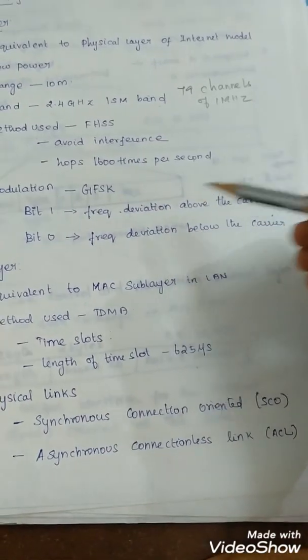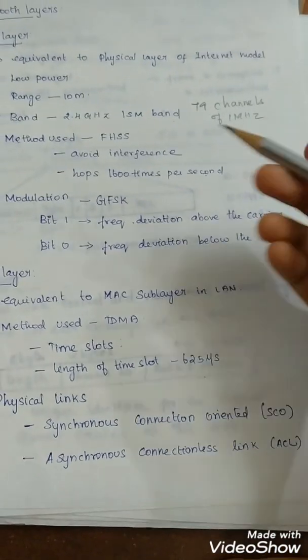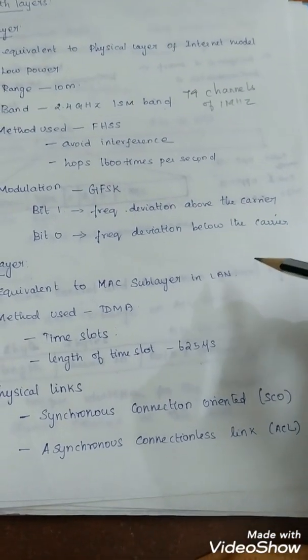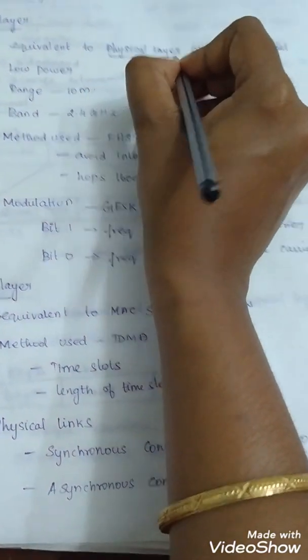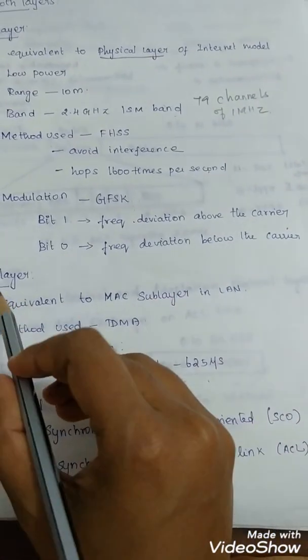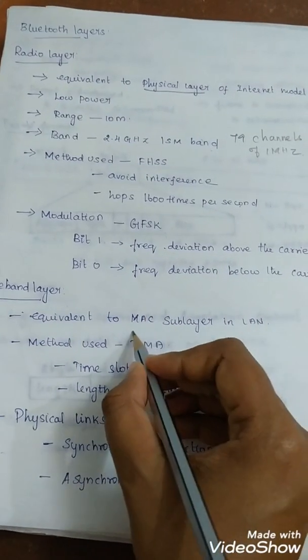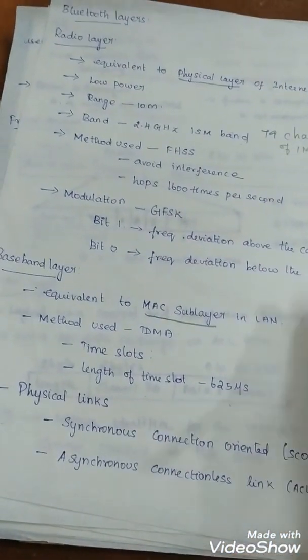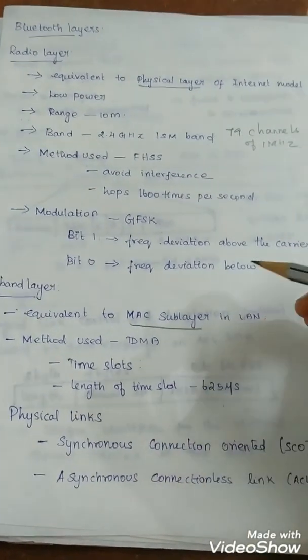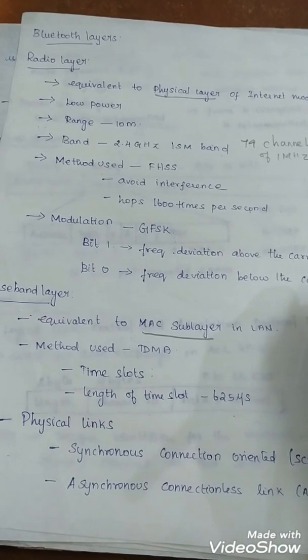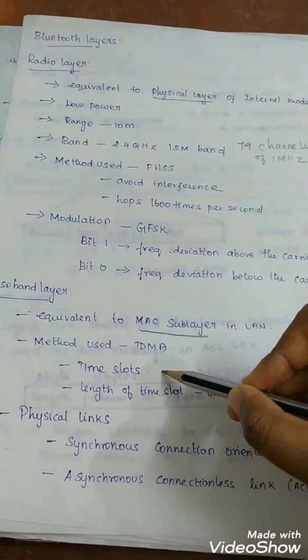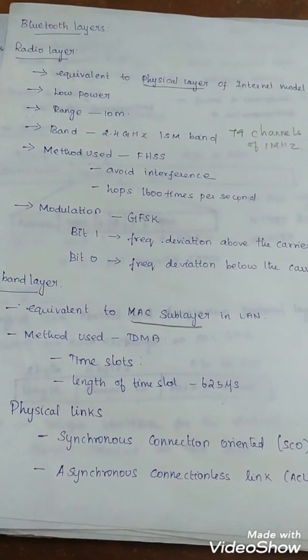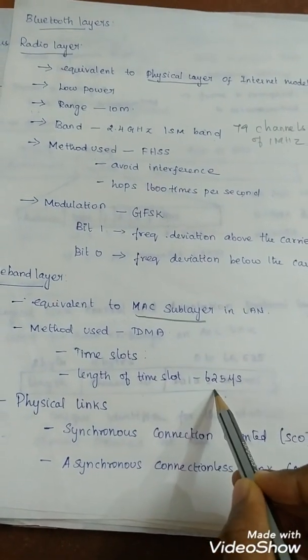Bit 0 represents frequency deviation below the carrier. The next layer is baseband layer. It is equivalent to the MAC sublayer in the LAN network. Radio layer is equivalent to the physical layer. The method used is TDMA: Time Division Multiple Access. The primary and secondary station communicate with each other using time slots. The length of a time slot is 625 microseconds, same as the dwell time.